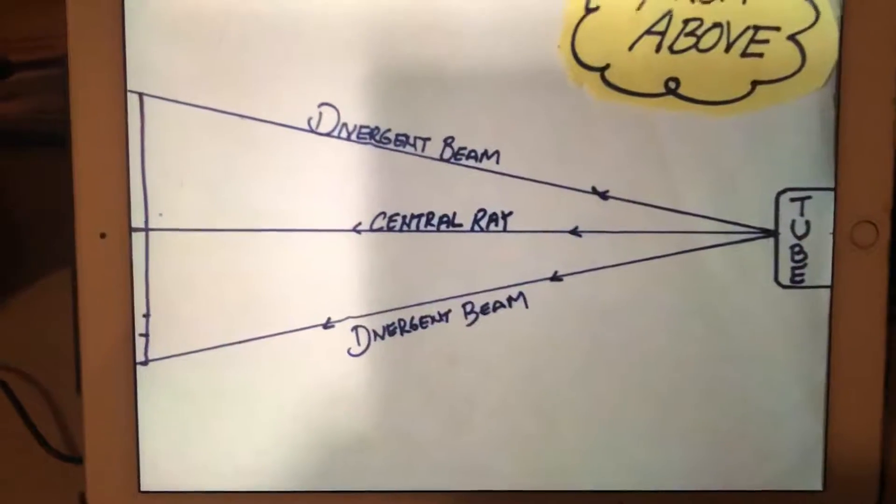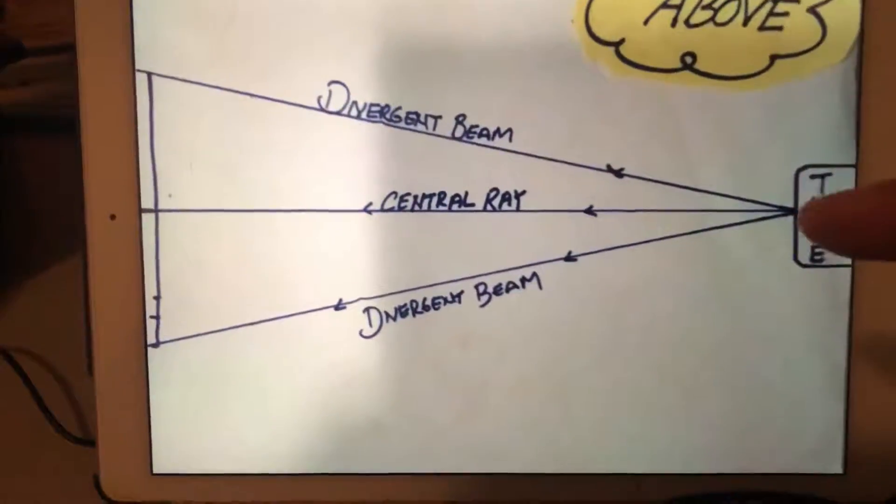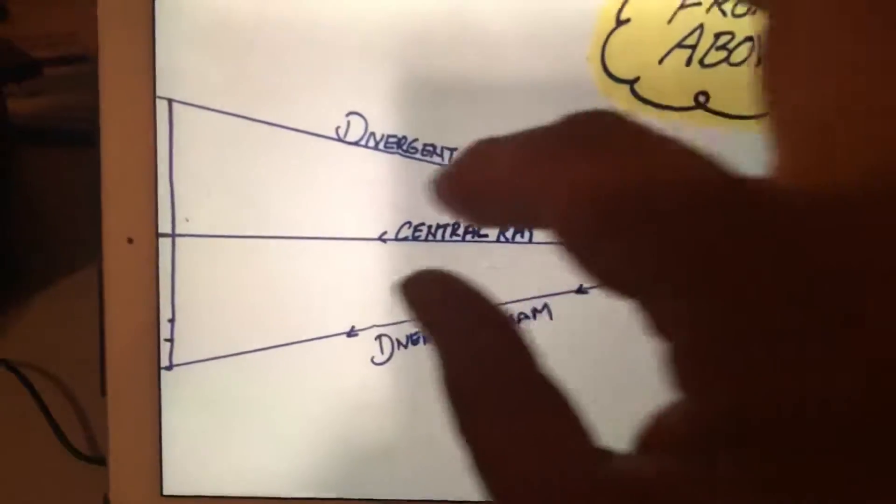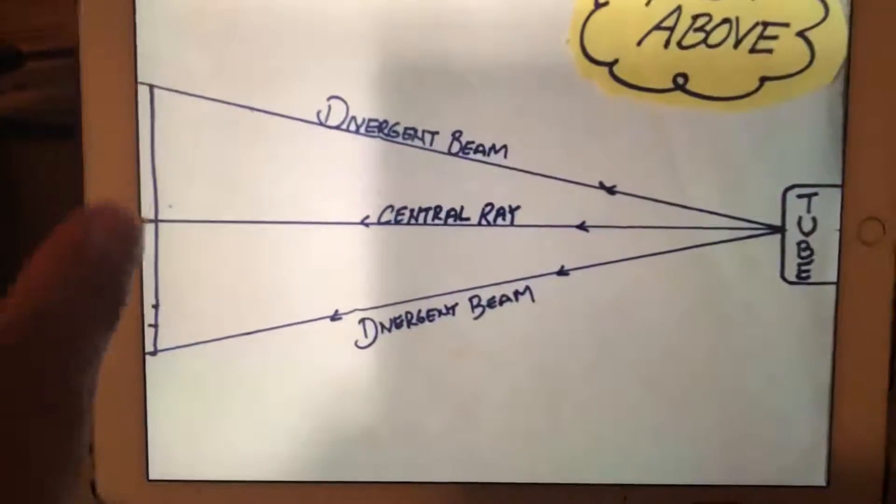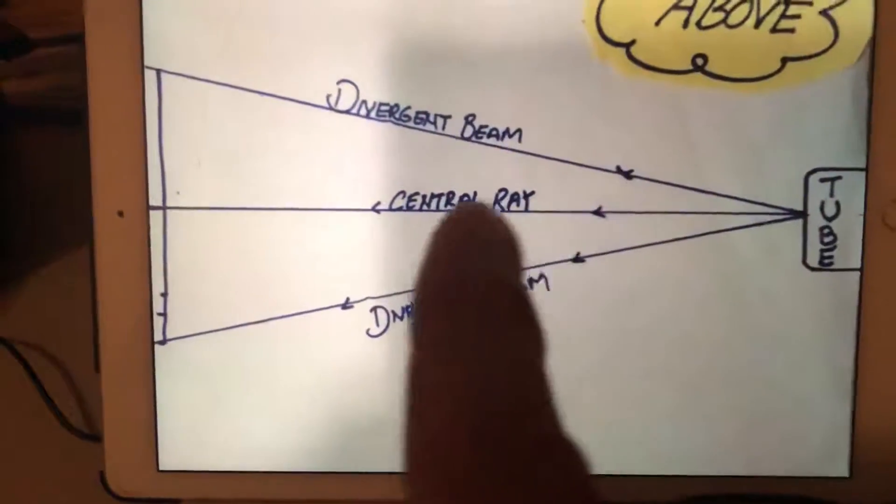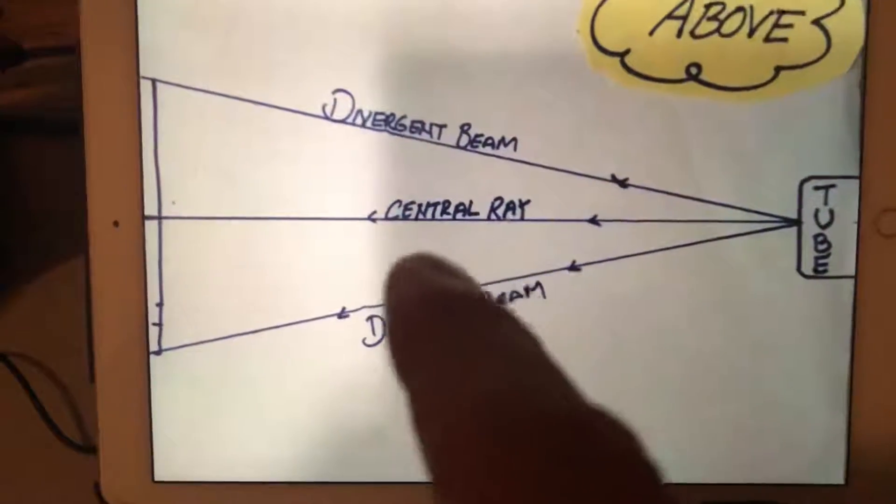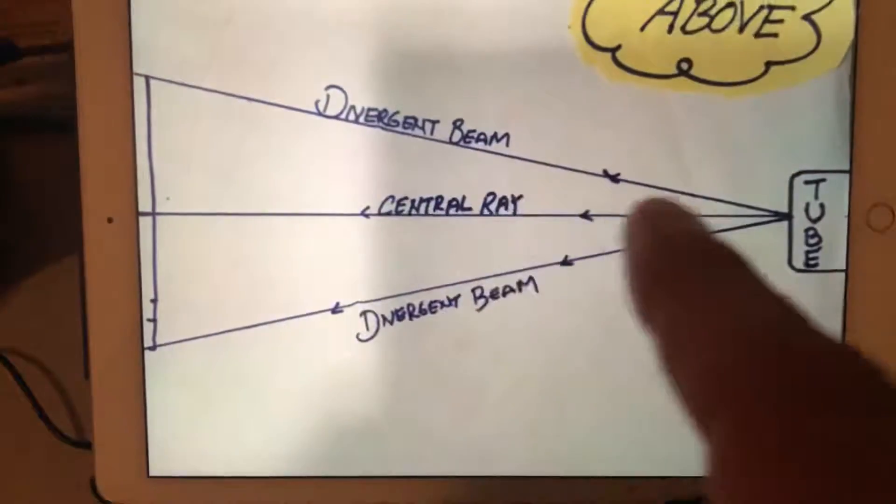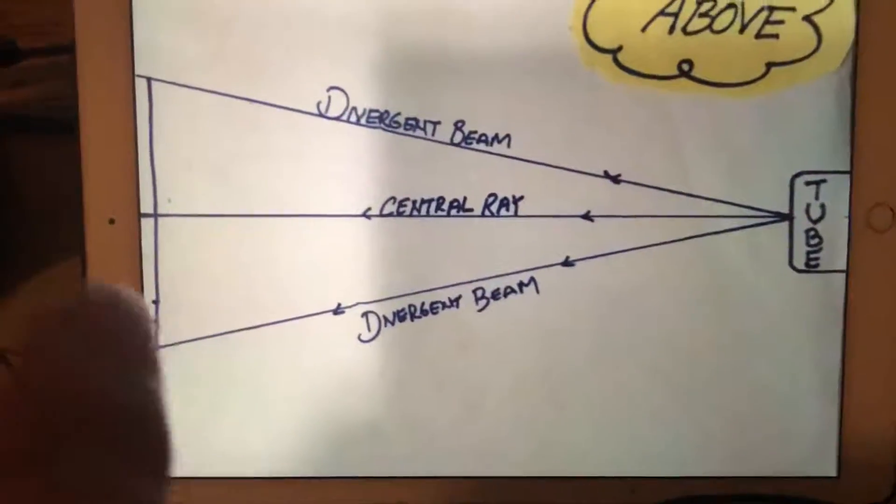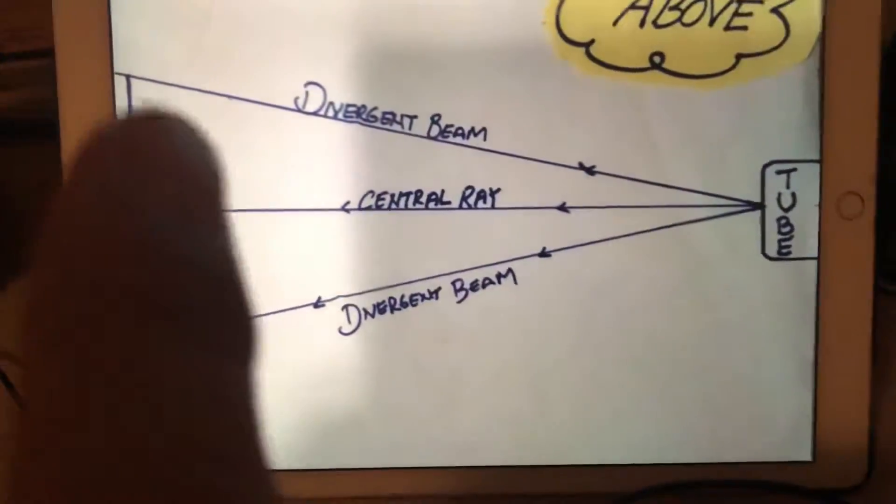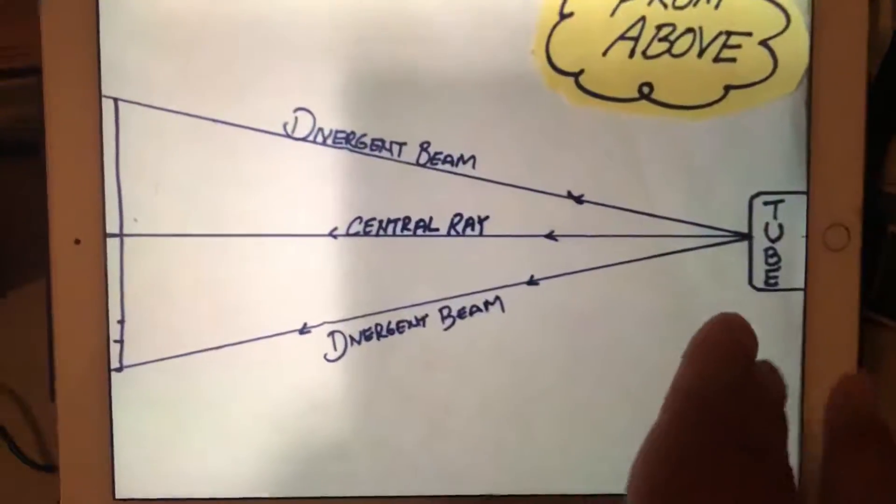First, you have to understand how the room is set up. Here's the tube, here's the central ray, and the divergent beams here. Here's the receptor. The central ray is coming straight out at 90 degrees, hitting the receptor. Every other angle that's coming out of here is not hitting it at 90 degrees, and will need to be adjusted in about a minute.